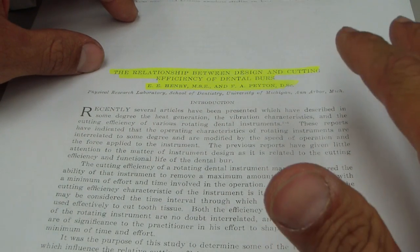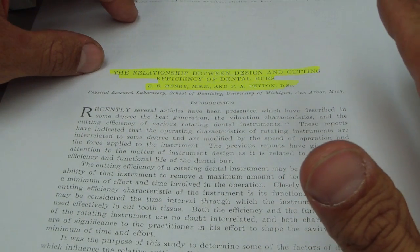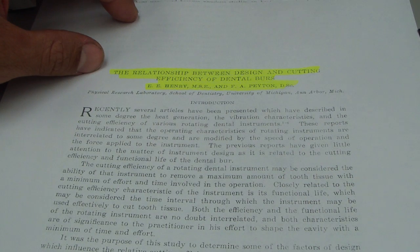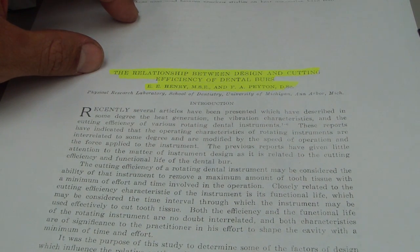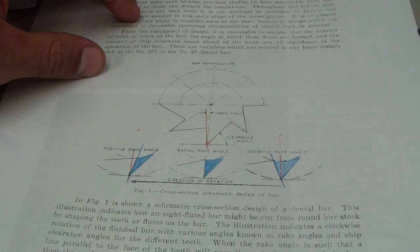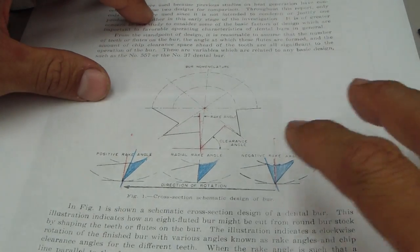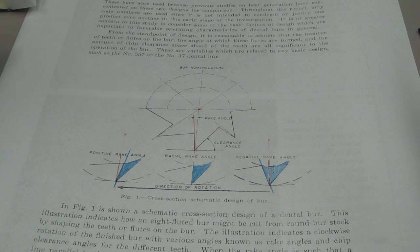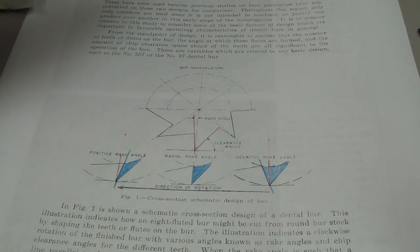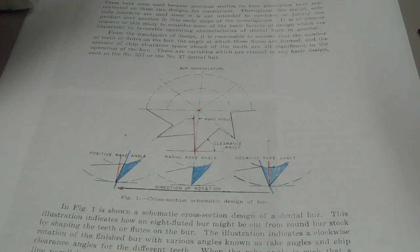These guys took, the relationship between design and cutting efficiency of dental burrs, they took two burrs, a 557 and a 34, a 37 burr and they did a cross section of them and then measured the rake angle and then they tested the cutting efficiency of each. So what's this rake angle thing about?